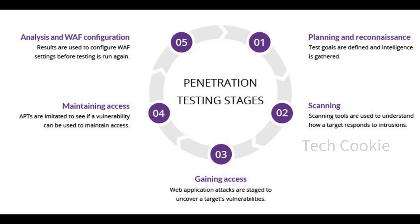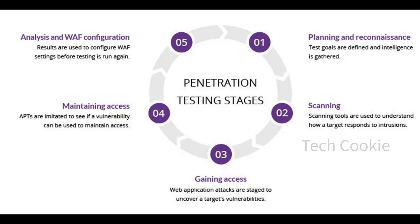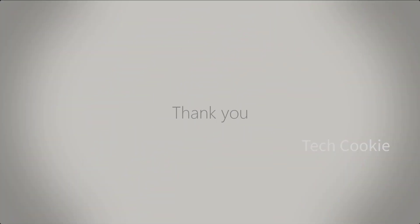In the post-exploitation stage, for example, if we have a payload to send, we have to hack the system first. Then we send some malicious code — for example, install a payload, delete traces, cover tracks — and we can access the target system from anywhere at any time. So guys, these are the five stages in penetration testing.